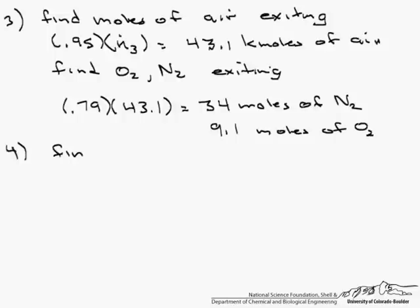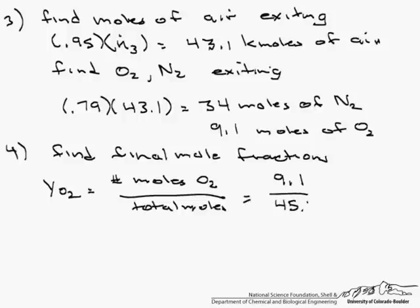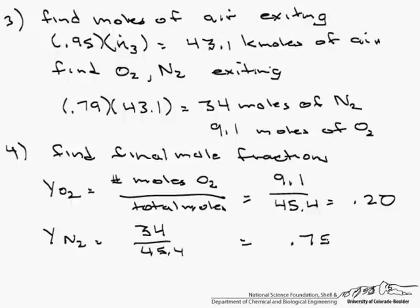And finally, we find the final mole fractions. And remember our YO2, which is the mole fraction of oxygen, is the number of moles of O2 over total moles. Not moles of air, but total moles, which is 9.1 divided by 45.4, which is 0.20. So YN2, we find the exact same way, 34 divided by 45.4, and that equals 0.75. This corresponds, 0.20 and 0.75, to the 0.95 mole percent of air in the final stream. So that's a check to make sure that we have done it correctly.